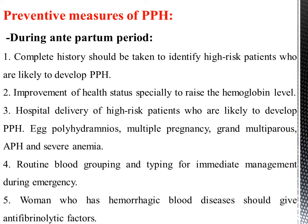Preventive measures of postpartum hemorrhage — During the antepartum period: a complete history should be taken to identify high-risk patients who are likely to develop postpartum hemorrhage; improvement of health status, especially to raise the hemoglobin level; hospital delivery of high-risk patients; routine blood grouping and typing for immediate management during emergency; and women who have hemorrhagic blood disease should be given anti-fibrinolytic factors.